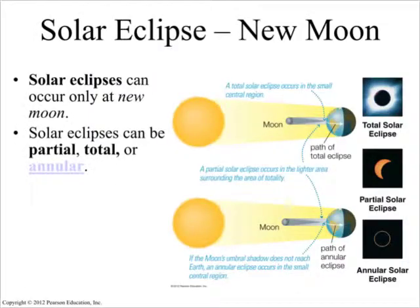So, eclipses of the sun, then, can only happen when the moon is in what we call its new phase. Again, we'll talk about full moon, new moon, and kind of the quarters between them. But in this case, the moon is blocking out the disk of the sun. So, it's just got to be just right.